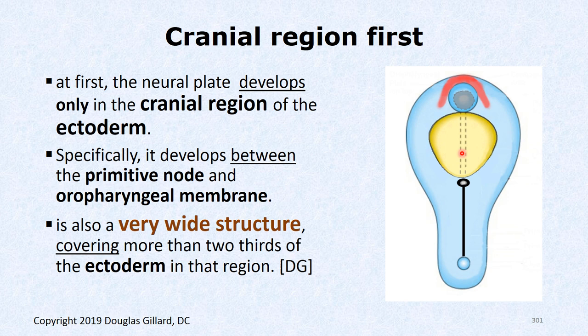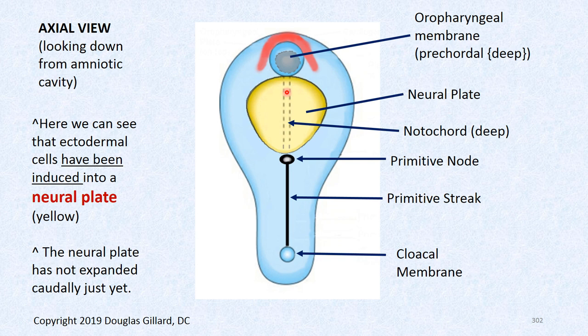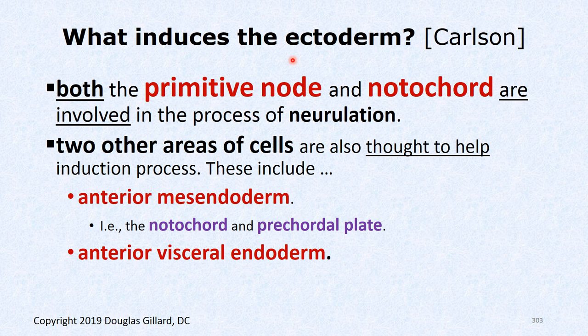The notochord is between the ectoderm and endoderm - shown as a dotted line, deep to the neural plate. The notochord in the last video bumped into the precordal plate, so it doesn't grow further than that. What induces the ectoderm to become neural ectoderm? There are proteins and genes turned on from the notochord and primitive node. The anterior mesoendoderm region - which is a fancy way to say notochord and precordal plate - as well as the AVE cells, the anterior visceral endoderm, also pitch in. But mainly the notochord and primitive node cause the cells to morph into a plate.